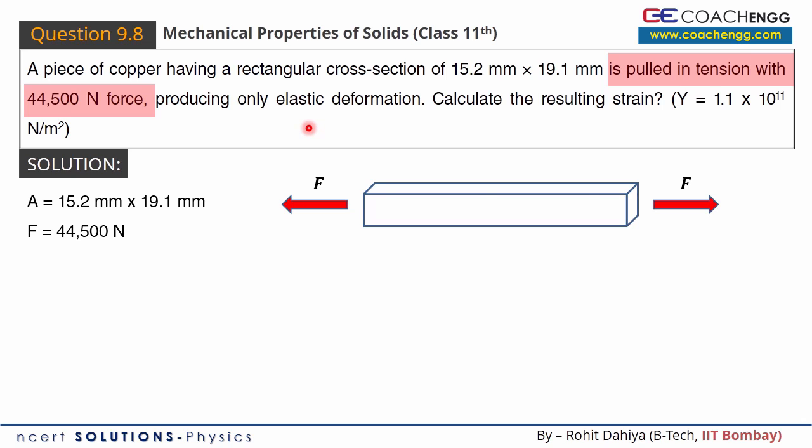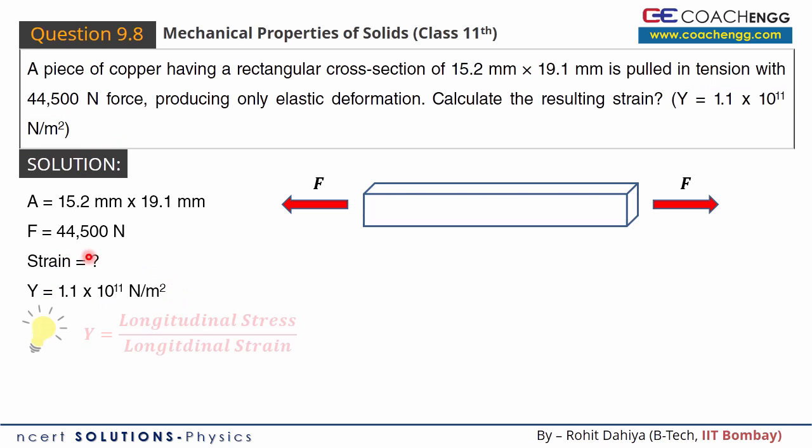We will try to use that to calculate the resulting strain, so I have to calculate the value of strain. Young's modulus here is 1.1 × 10^11 Newtons per meter squared. So Young's modulus value we have noted down. Now we will use the definition of Young's modulus, which is the ratio of stress and longitudinal strain.